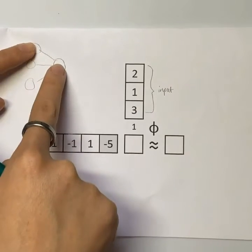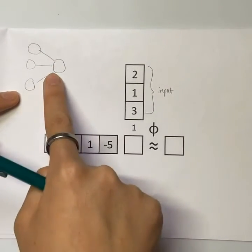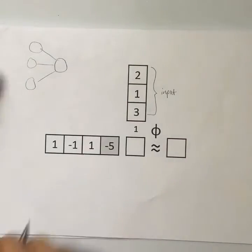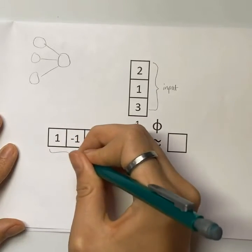So this one might be providing the two, this one is providing the one, and this one is providing the three. Now each of these nodes in the previous layer is weighted in a different way.